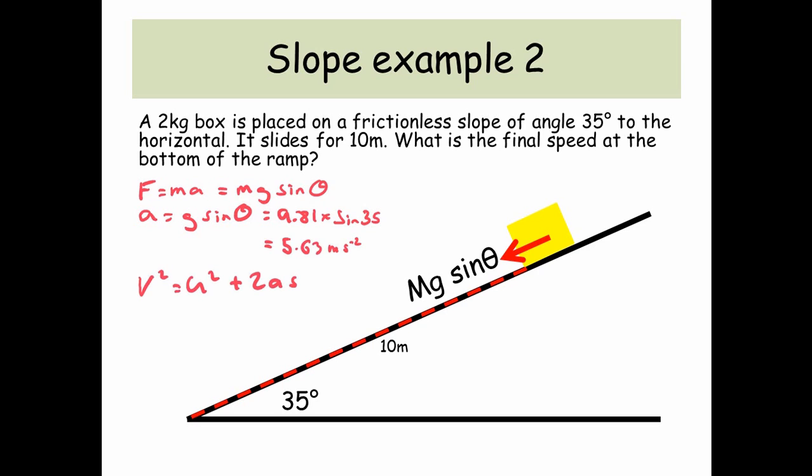Now we're going to use one of our SUVAT equations of motion and we're going to use V squared equals U squared plus 2AS. So V squared equals 0 squared plus 2 times 5.63 times by 10. 0 squared because it's starting from rest, plus 2 times our acceleration down the slope which is 5.63, and then times by 10 because it's going a distance of 10 meters. And we get V squared is equal to 112.5. So if we square root that answer we get a final answer of 10.6 meters per second.